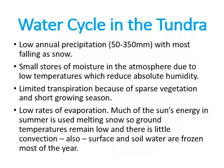Let's look at the water cycle in the tundra. There's very little precipitation — we've got high pressure in charge, high equals dry; we call them the polar highs. Most precipitation that does fall, only between 50 and 350 millimetres a year, falls as snow, which then turns to ice. There's very little moisture in the atmosphere because it's so cold — very little humidity. Compare that to the Amazon rainforest, where there are huge volumes of moisture in the atmosphere — it's the complete opposite.